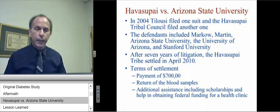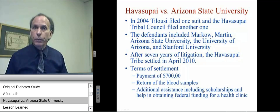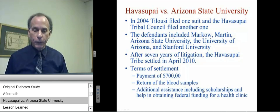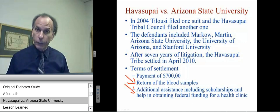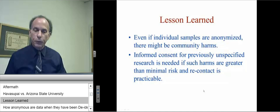What happened next was a lawsuit against Arizona State University; defendants included the investigators as well as the university. After seven years of litigation, the Havasupai tribe settled in April of 2010. Terms of the settlement involved a payment of $700,000, return of all blood samples, and additional assistance including scholarships and help in obtaining federal funding for a health clinic. Lessons learned: even if individual samples are anonymized or de-identified, there could be community harms. Informed consent for previously unspecified research is needed if such harms are greater than minimal risk and recontact is practicable.